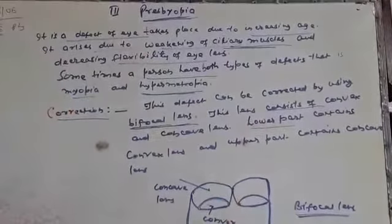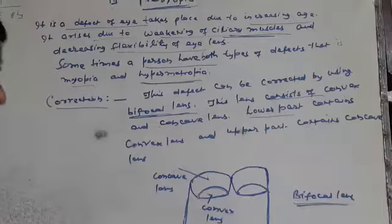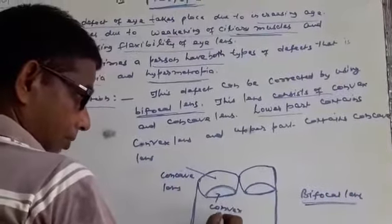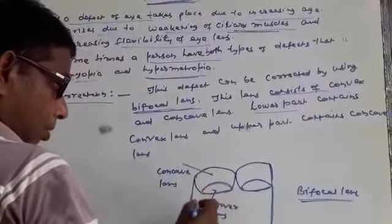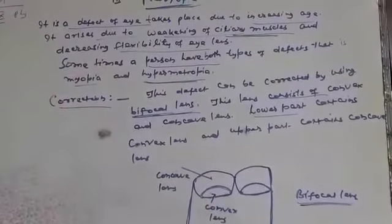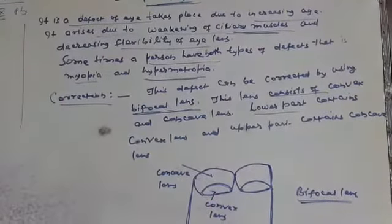This is the figure of lens or spectacles containing both types of lens. This is presbyopia.